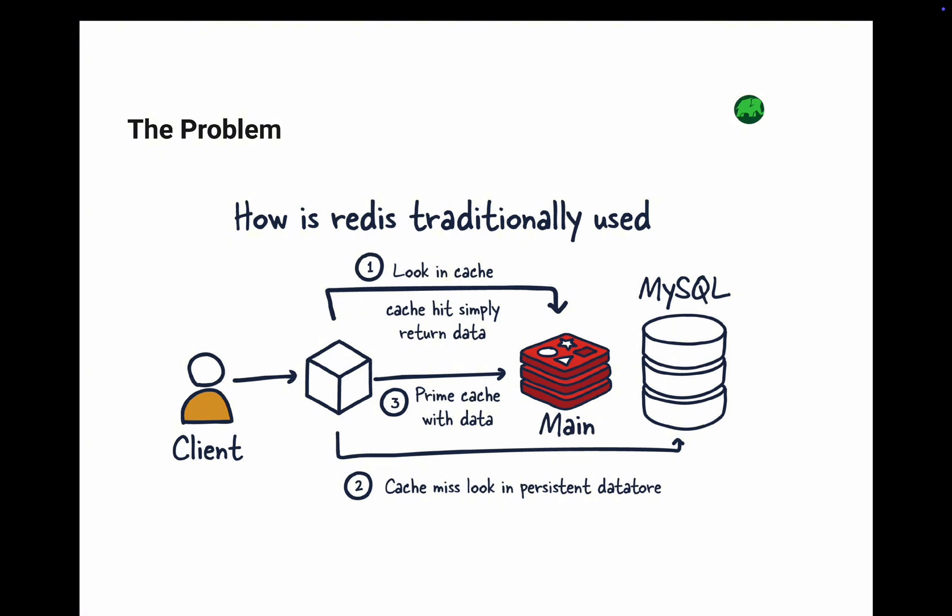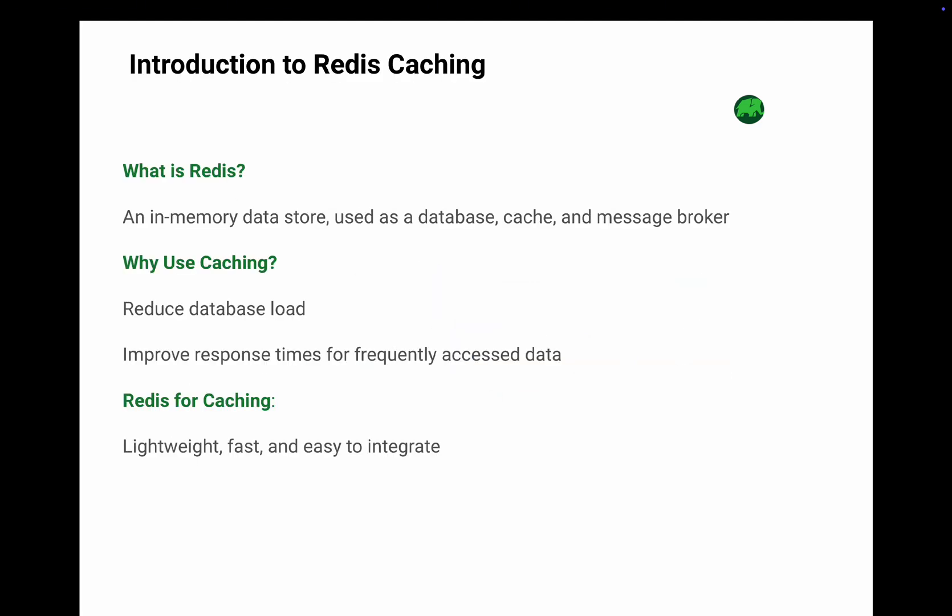That is where Redis comes in — a fast in-memory data store to bridge the gap between your app and the database. By caching frequently accessed data, Redis reduces the load on your database and makes your app lightning fast. Redis stands for Remote Dictionary Server. It is an in-memory data store, which means it stores data in your server's RAM, making it super fast. You can use Redis as a database to store key-value pairs, as a cache to store frequently accessed data, and as a message broker to manage communication between different parts of your system. It is lightweight, reliable, and easy to set up.